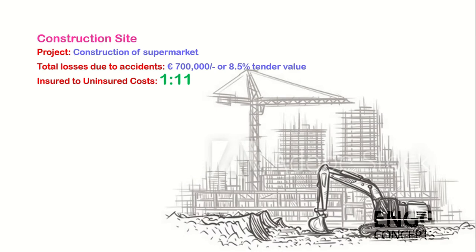Let's see two case studies on accident costs in the workplace to illustrate the difference between insured and uninsured costs. First, a construction site: a company was given a project to construct a supermarket in two months. The total losses due to accidents during the project were 700,000 euros, equating to 8.5 percent of tender value. When comparing direct and indirect costs, the insured to uninsured ratio was 1 to 11.